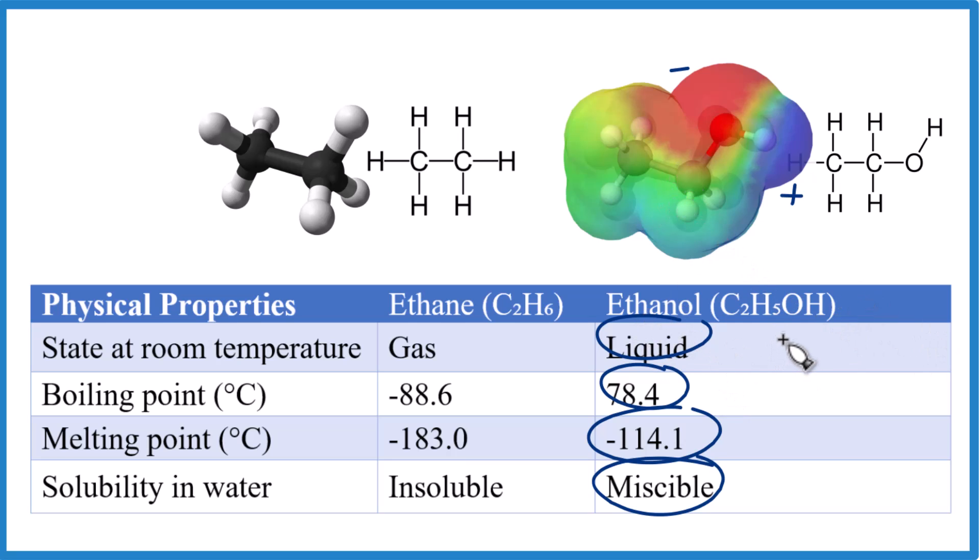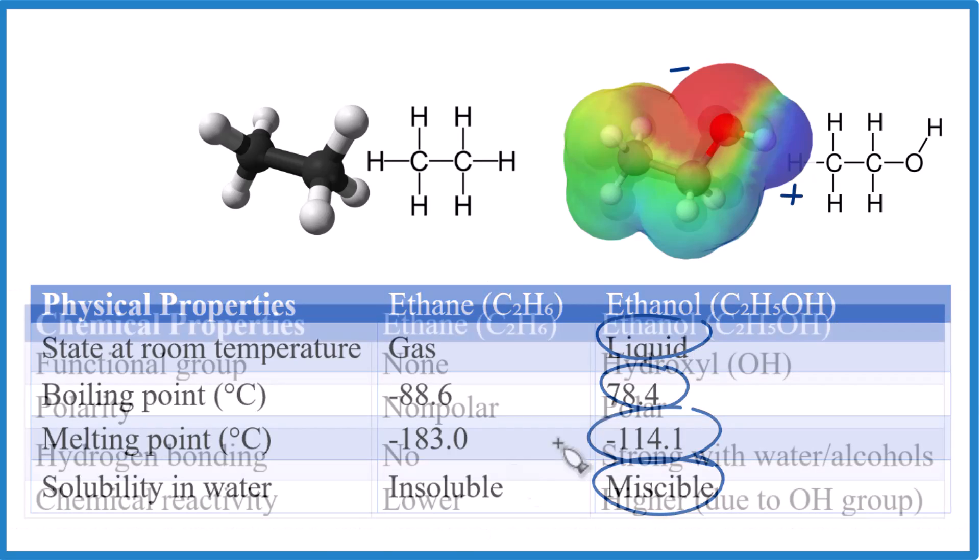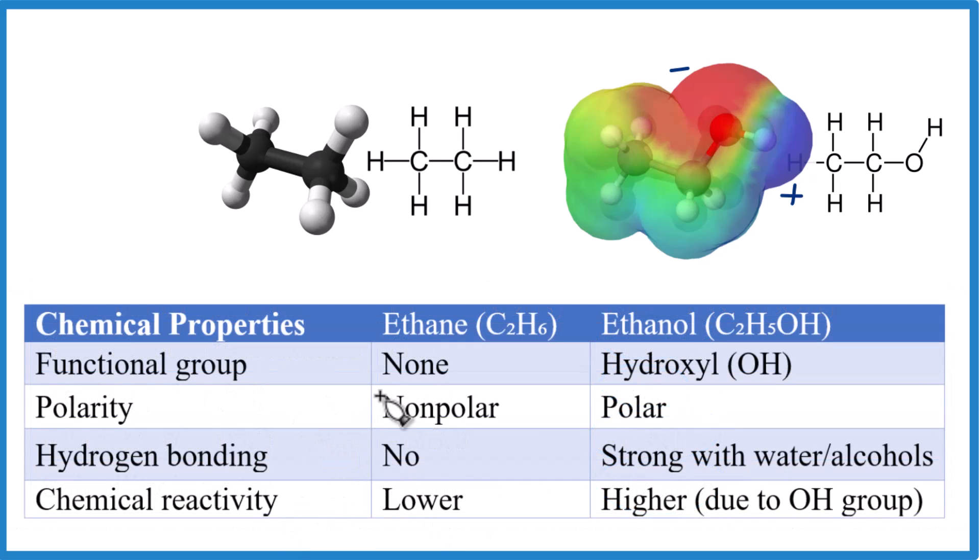Let's look at the chemical properties for ethane and ethanol. The chemical properties are related to the physical properties, and it all goes back to the polarity. We don't really consider ethane as having a functional group - it's an alkane. For ethanol, we have this hydroxyl group, which is different than the hydroxide ion. This is hydroxyl OH bonded to the carbons.